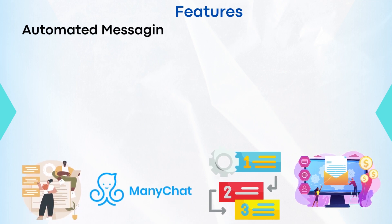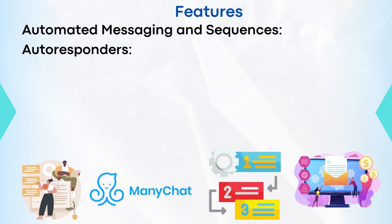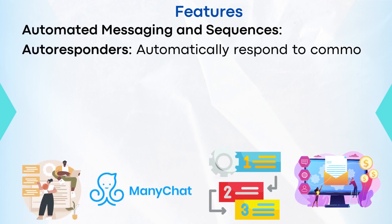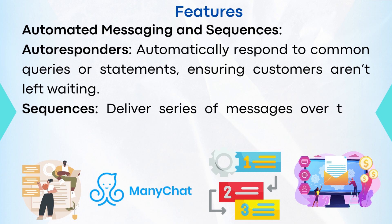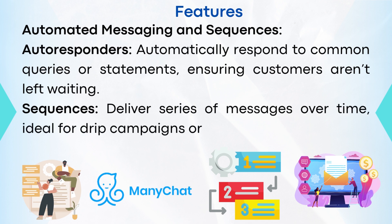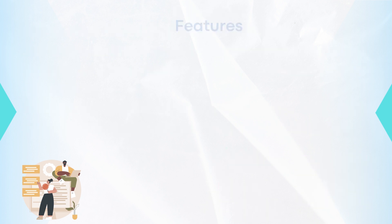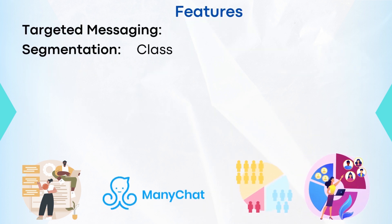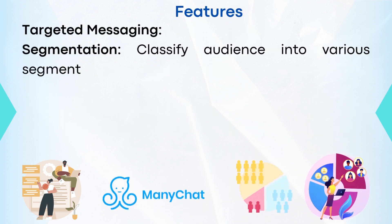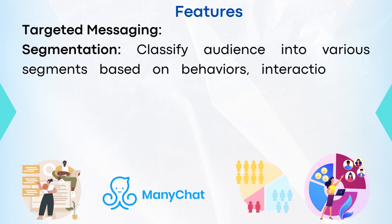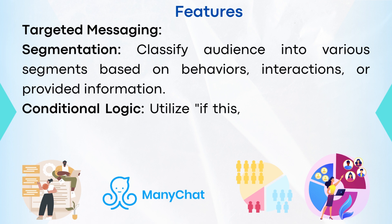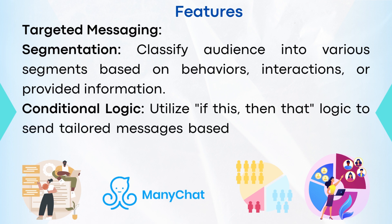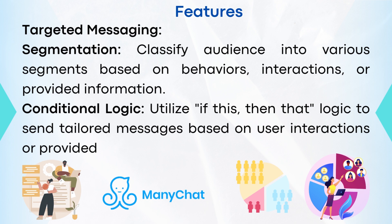Number two: automated messaging and sequences. Autoresponders automatically send responses to common queries or statements, ensuring customers aren't left waiting. Sequences deliver a series of messages over time, ideal for drip campaigns or onboarding processes. Number three: targeted messaging. Segmentation classifies audiences into various segments based on behaviors, interactions, or provided information. Conditional logic utilizes if-this-then-that logic to send tailored messages based on user interactions or provided data.